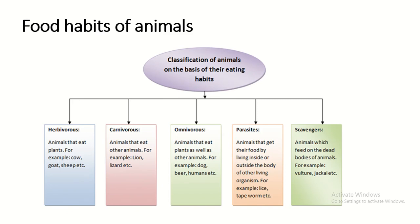Now, food habits of animals. Depending on the food the animals eat, they can be classified into different groups: Herbivores, Carnivores, Omnivores, Parasites, and Scavengers.